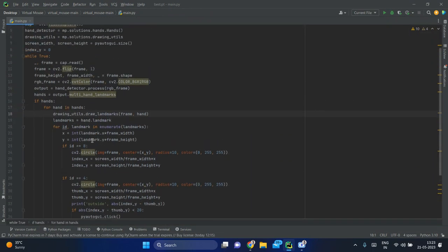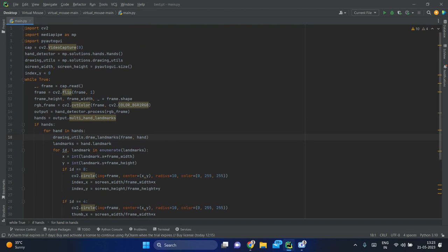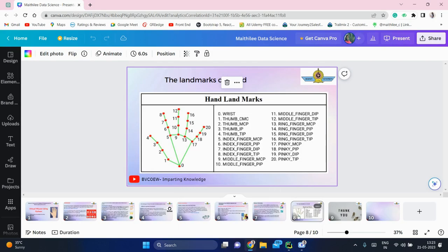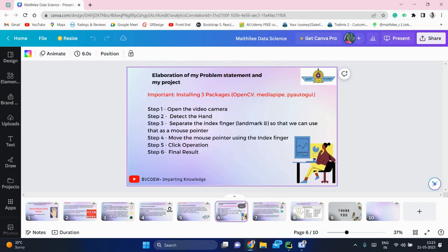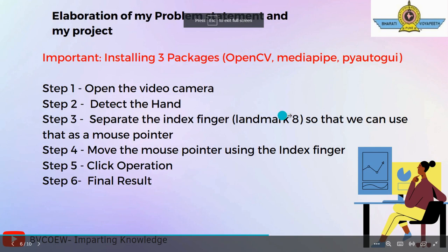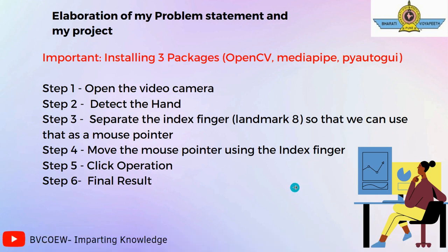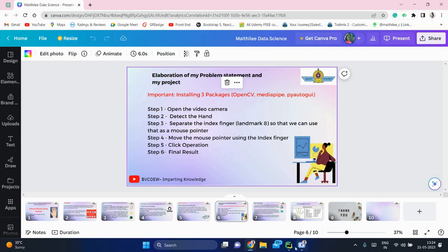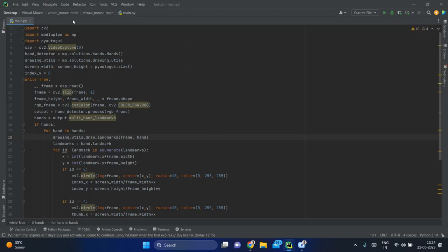Let me briefly revise the six steps so it's easier to understand what I've implemented in my code. In the first step we opened the video camera. Next, we detected the hand. Then we separated the index finger — the landmark ID is equals to 8, and for the thumb ID is equals to 4. Then we moved the mouse pointer using the index finger, performed the click operation, and that was the final result which you could see in the video.